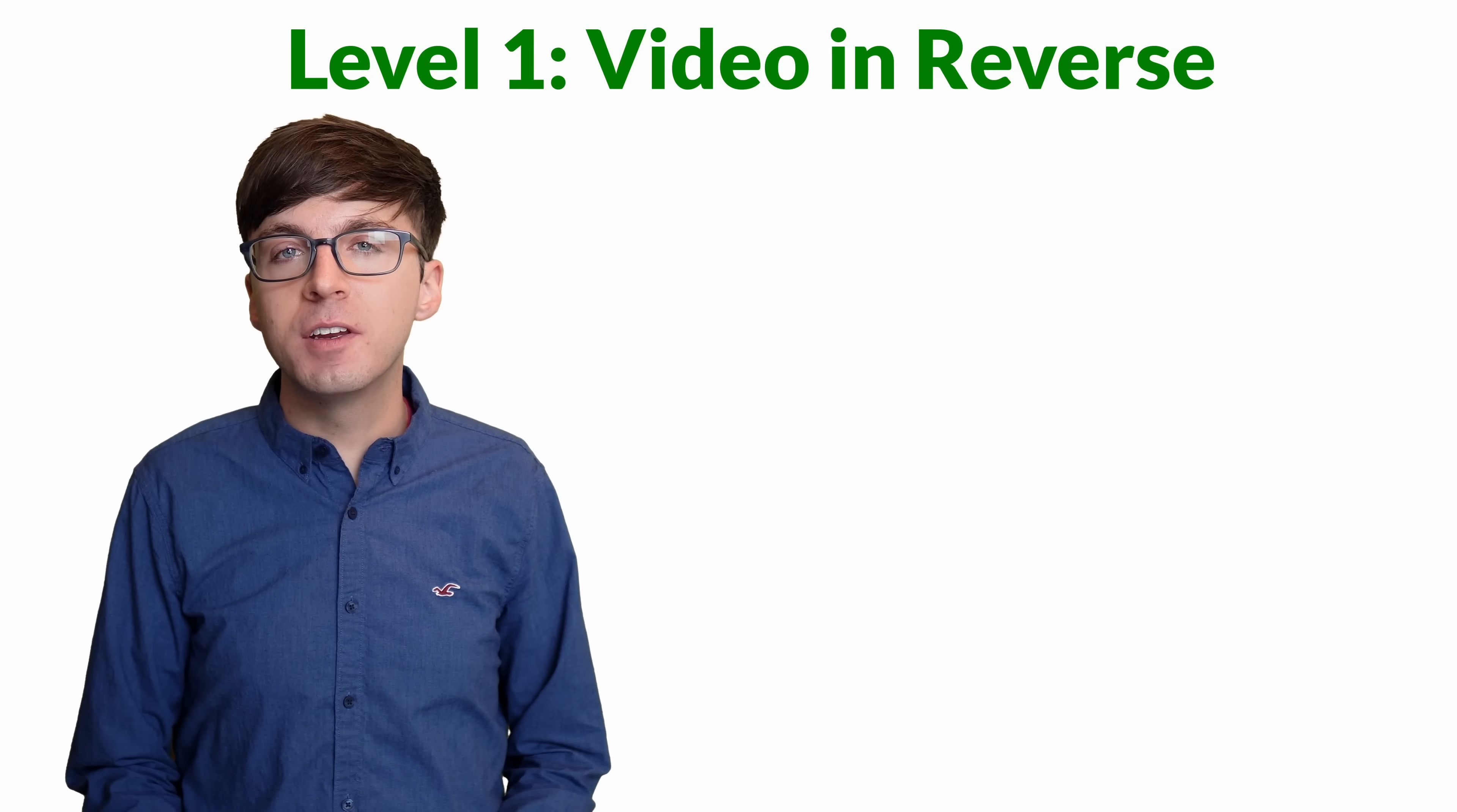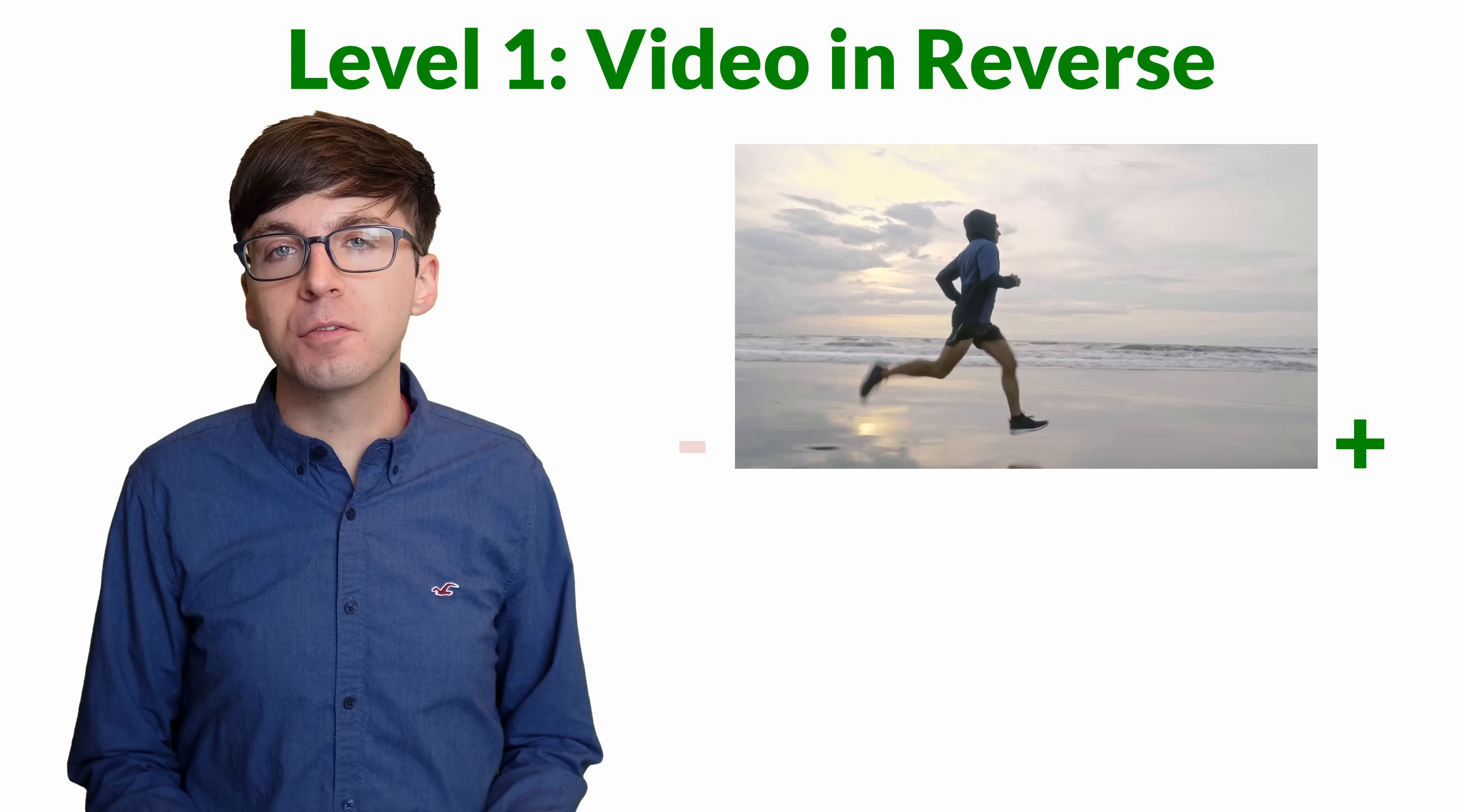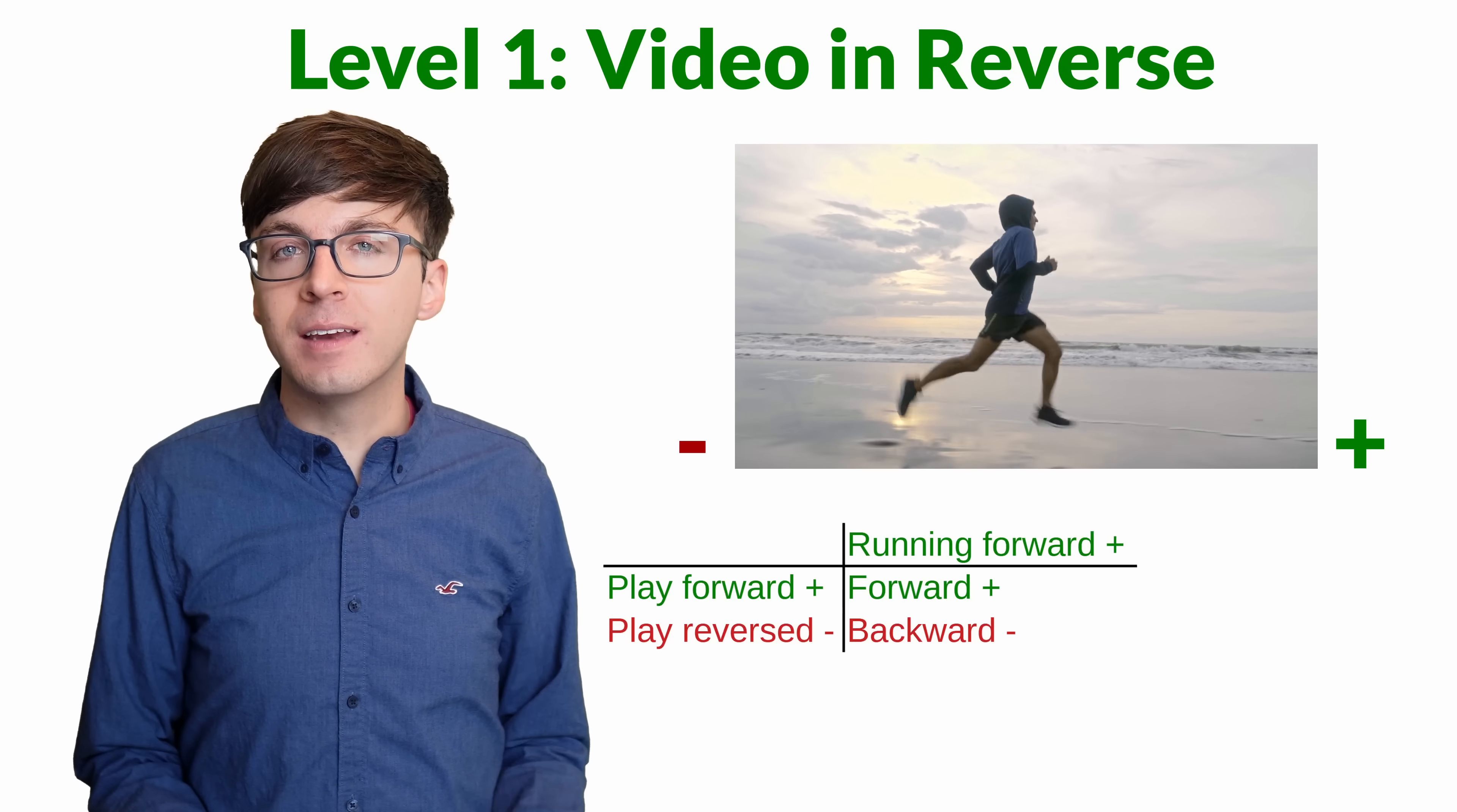For level one, say we have a video of someone running forward. For this particular clip, forward is to the right, so we'll call right the positive direction and left will be negative. When we play the clip, the person runs in the positive direction. If we play the clip in reverse, the person appears to run backward in the negative direction.